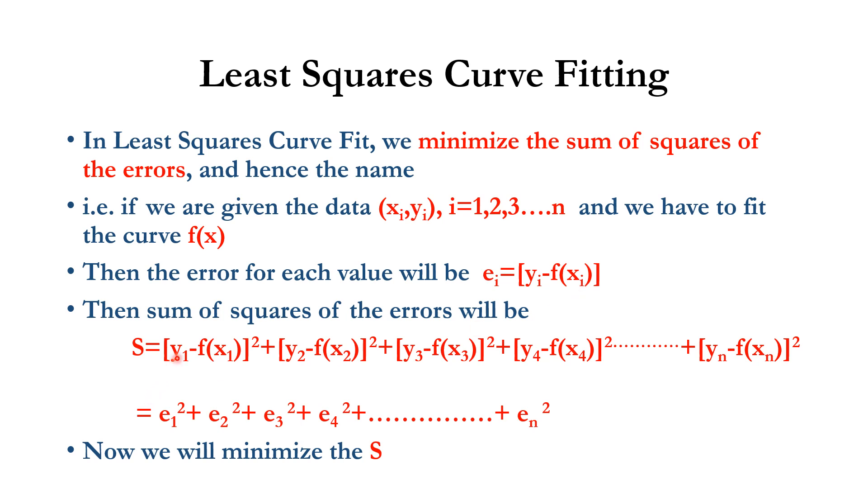Then, sum of squares of the errors will be like this. This is the error for the first value, the square, error for the second value, the square, the third value, the square, and the last value, the square. And after that, the total sum is calculated. So, the sum of the squares of the errors is equal to e₁² plus e₂² plus e₃² plus up to the last value squared. So, we have to minimize the error.